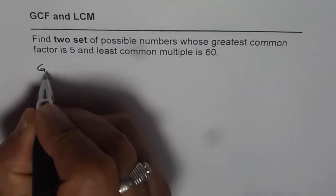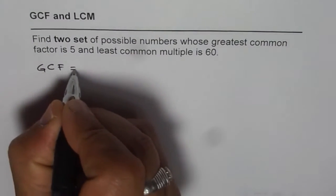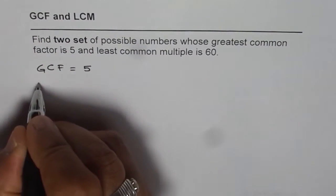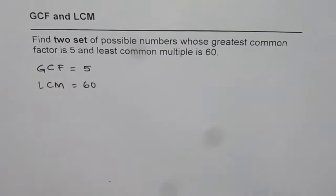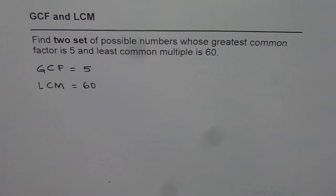So what we are given here is that the greatest common factor is 5 and least common multiple is 60. You need to find a set of two possible numbers. You can pause the video, answer the question, and then look into my suggestions.